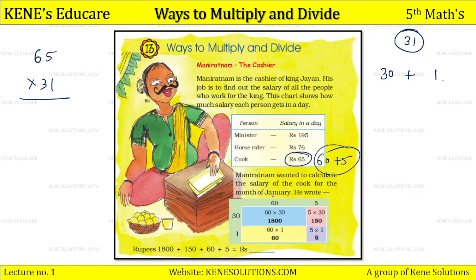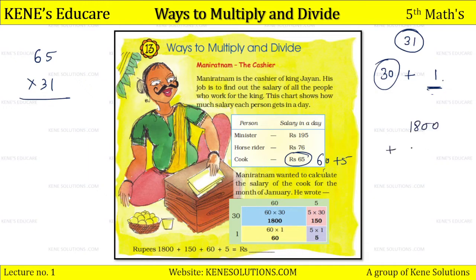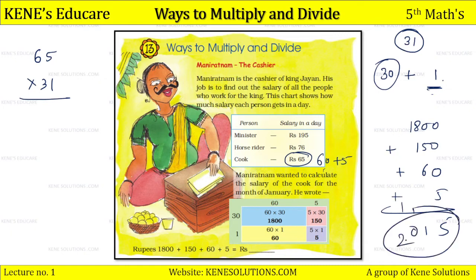He wrote 65 as 60 plus 5, and multiplied by 30. Then for the remaining 1 day: 5 times 1 is 5, and 60 times 1 is 60. Now we make the addition of all these numbers: 1800 plus 150 plus 60 plus 5. We get 5 and 6 making 11, carry 1 forward; 9 and 10, carry 1 forward; giving us 2015. That is the answer.